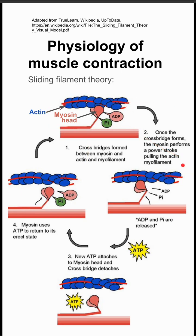Once the cross bridge is formed, the myosin performs a power stroke in which it jerks downward, leftward in this direction, and that causes the filaments to actually slide past each other. During this step, ADP and a phosphate group are released.